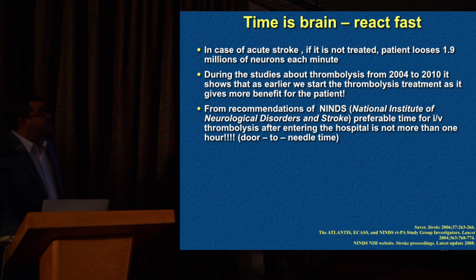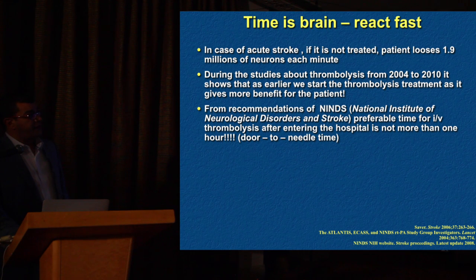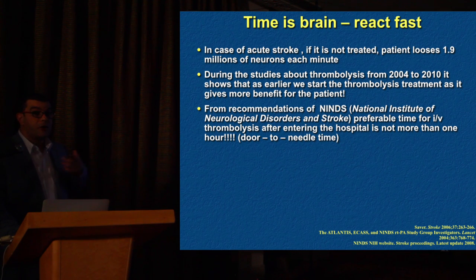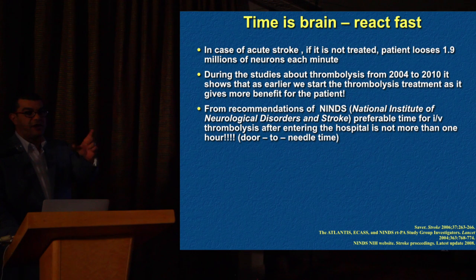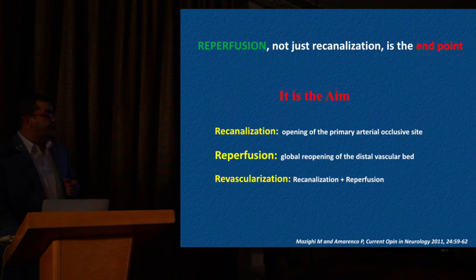In acute untreated stroke, a patient loses 1.9 million neurons per minute. Studies on thrombolysis from 2004 to 2010 show that the earlier we start thrombolysis treatment, the more benefit for the patient and more improvement in functionality. Even the National Institute for Neurological Disorders and Stroke recommends the door-to-needle time of around one hour. The earlier we can act, the better.